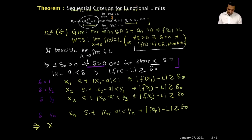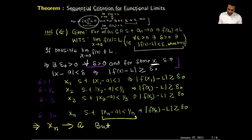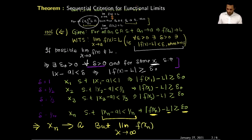We have constructed a sequence x_n which converges to a, because |x_n - a| < 1/n gets smaller as n grows larger. But at the same time, the distance between f(x_n) and l is always greater than or equal to epsilon_0, so the limit of f(x_n) cannot equal l. This is a contradiction to our given statement — we produced a sequence converging to a whose image under f does not converge to l. This completes the proof.